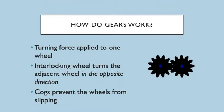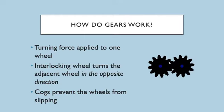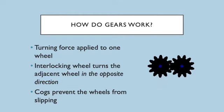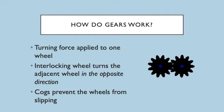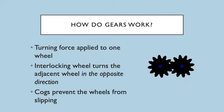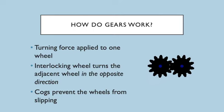So how do gears work? There's a turning force which we apply to one of the wheels and those wheels interlock and it turns the adjacent wheel but in the opposite direction. The cogs prevent the wheels from slipping, so they have those little teeth so that they don't slip between them. It's basically just transmitting a force from one wheel to the next wheel.